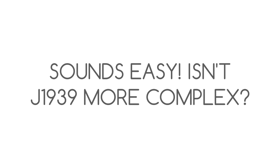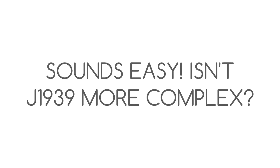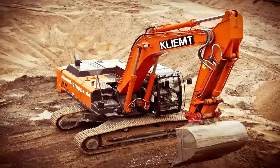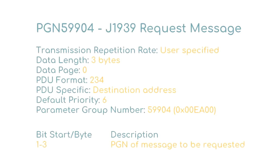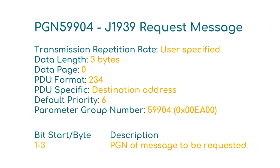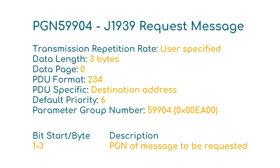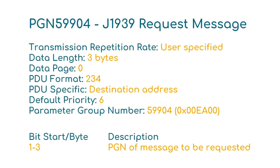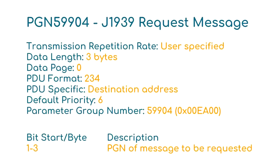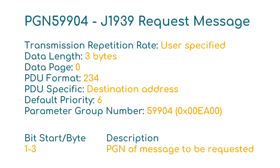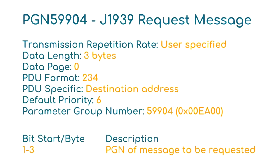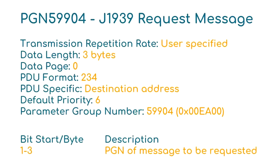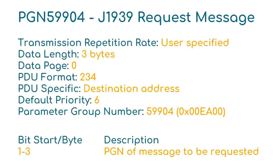Isn't J1939 more complex? The SAE J1939 protocol supports more advanced operations including request messages, multi-packeted messages, multiplexing, and more. Most J1939 messages are broadcast to the CAN bus, but some need to be requested. This is achieved using request message PGN 59904 — the only J1939 message with only 3 bytes of data. It has priority 6, a variable transmit rate, and can be sent as a global or specific address request. The data bytes 1–3 should contain the requested PGN in Intel byte order. Examples of requested J1939 messages include diagnostic messages (DM).